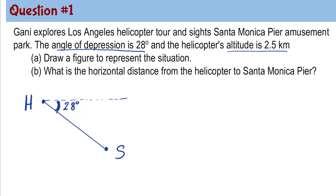The problem also stated that the helicopter's altitude is 2.5 kilometers. So from point H, we can draw a vertical line and that will form a 90 degree angle with the horizontal. Since the angle of depression is 28 degrees, this means that angle S is also 28 degrees by using the alternate interior angle theorem. Another given is the height of the helicopter, which is 2.5 kilometers.